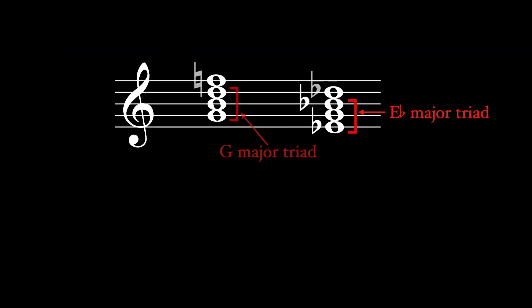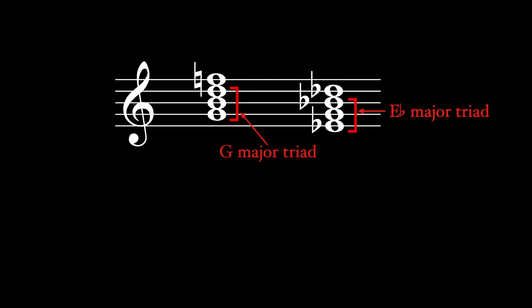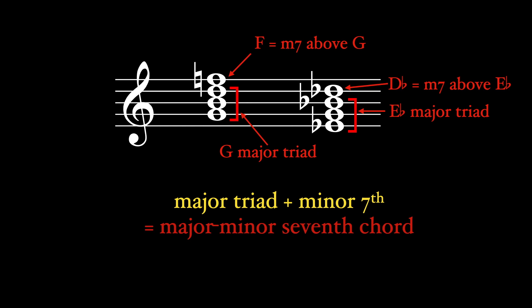If we start with the same major triads, but add minor sevenths instead of major sevenths, we get what some people call a major minor seventh chord.